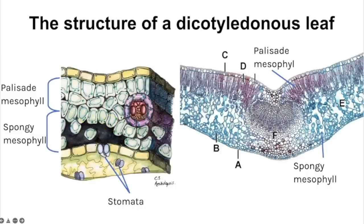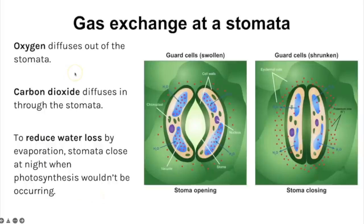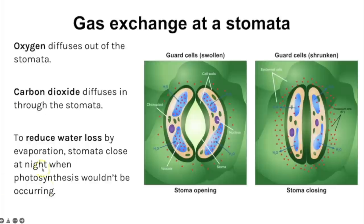Gas exchange in leaves: the palisade mesophyll is where photosynthesis mainly occurs, the spongy mesophyll contains air spaces, and the stomata are where gases diffuse in and out. Oxygen diffuses out if not used in respiration, and carbon dioxide diffuses in for photosynthesis. To reduce water loss by evaporation, stomata close at night when dark and open in daytime — linked to the light-dependent reaction of photosynthesis.